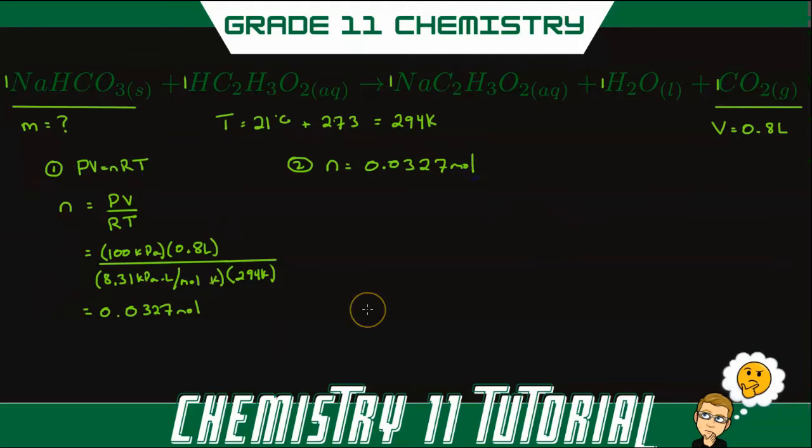Now there is another way you could have done this. You could have figured out the number of moles without using PV equals nRT, but you could have just used the number of moles is equal to the volume of our carbon dioxide gas over the molar volume at standard atmospheric temperature and pressure. Now this is for 100 kilopascals and 25 degrees. Now our temperature is 21 degrees, so it will be a little bit off. But if you use the molar volume at SATP to be 24.8 liters per mole, you will get n to be equal to 0.0323 moles. So very close and a lot quicker.